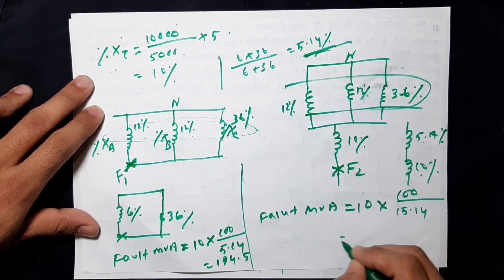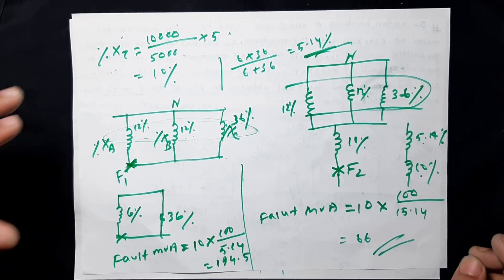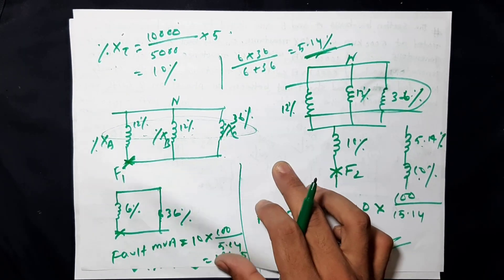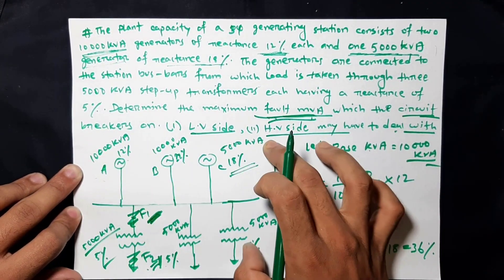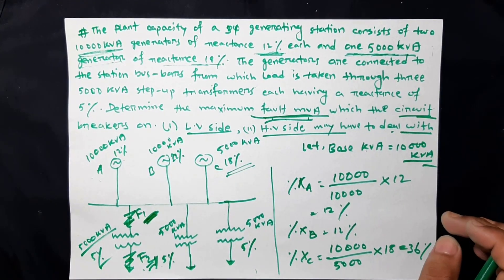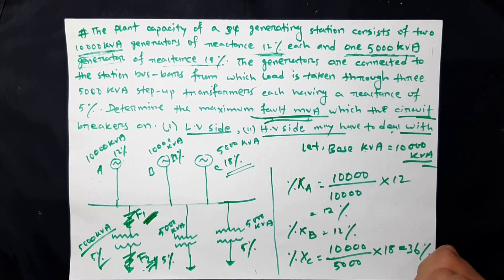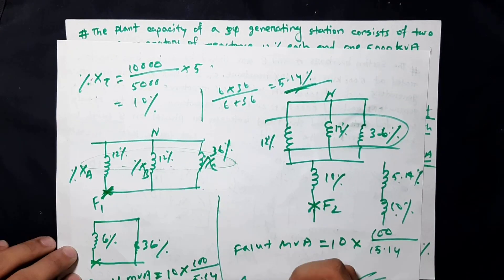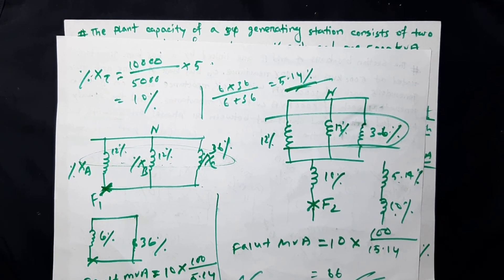We can see the answer is 66. That's why we have 40 MVA. We have a single line diagram with 200 MVA and 75 MVA — that means 300 MVA and 100 MVA. Three parallel points give us the final result. Thank you.